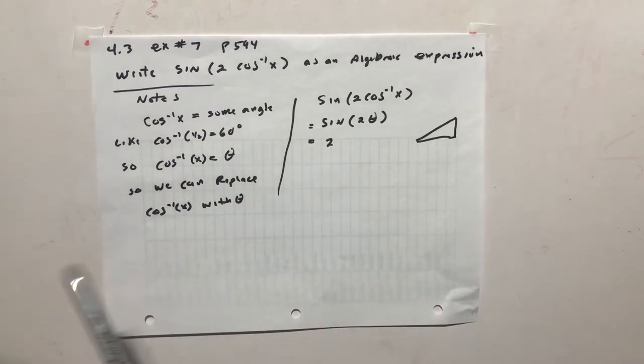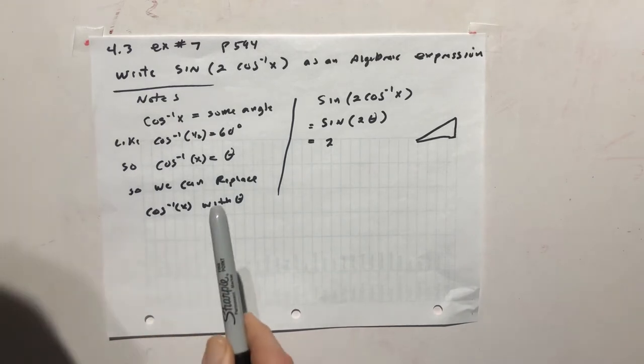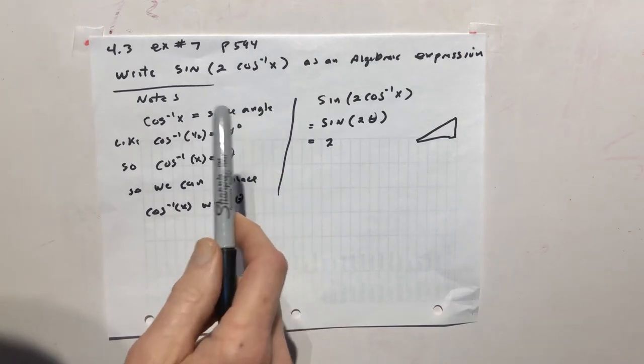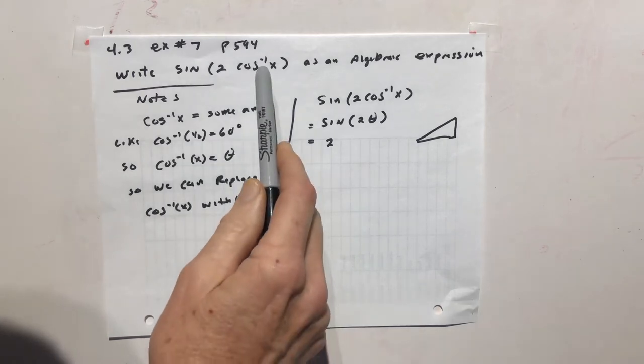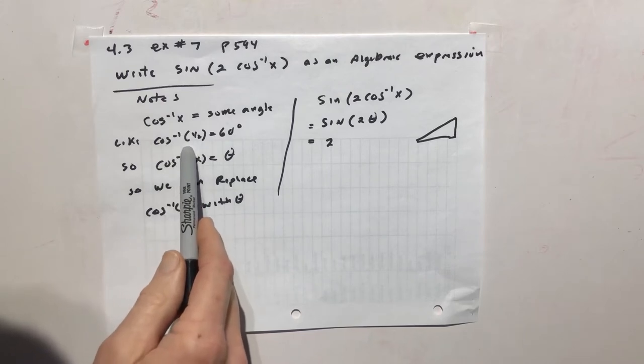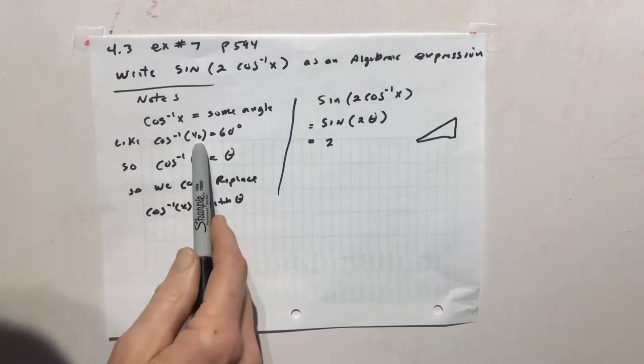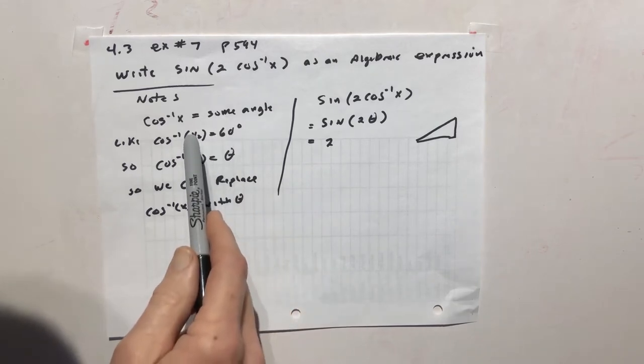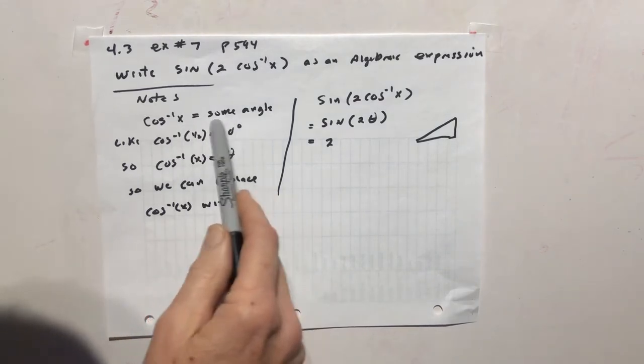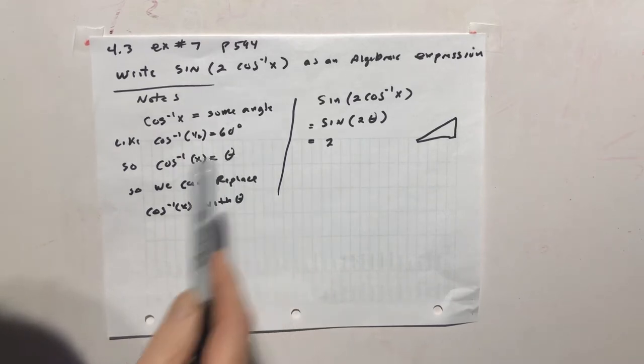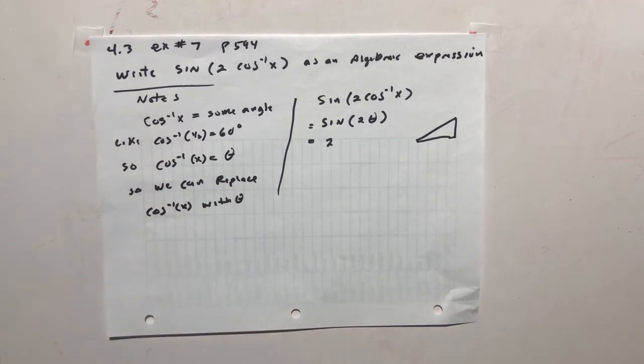Let me give you some notes. The cosine inverse means you're trying to find out how big the angle is. For example, if we know what x is, like cosine inverse of a half is 60 degrees, but we don't know x. But this is going to be some angle. If we knew x, we could find the angle, but we don't know x, so we'll just say it's some angle. Let's give it a name, let's call it theta. It took me a little while to understand that, so hopefully that explanation will help you.